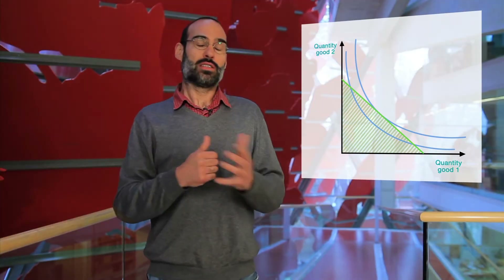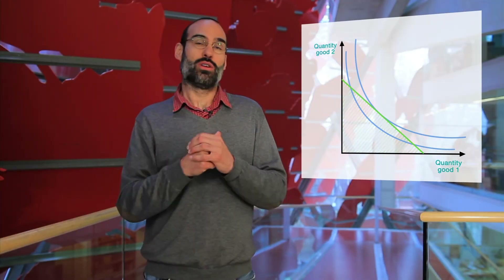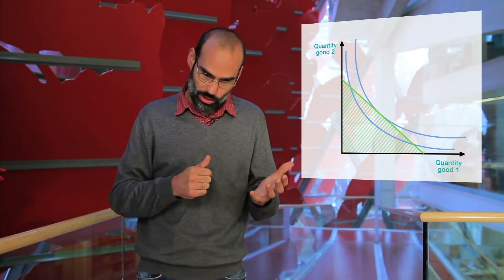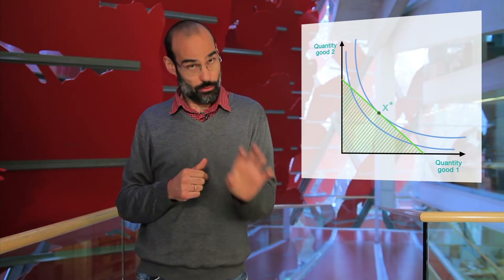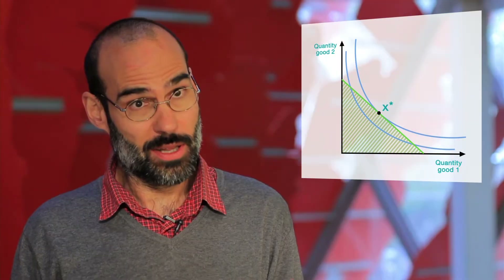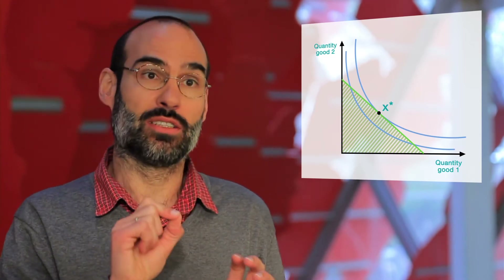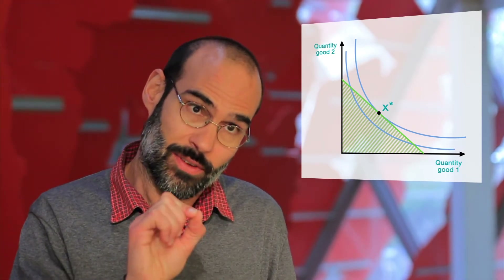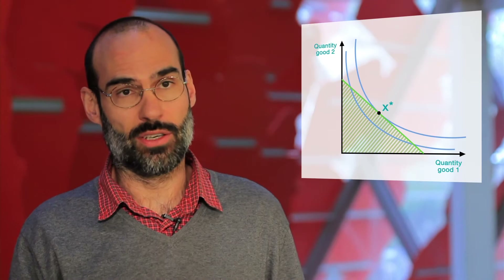The problem of the decision maker is to select one of these consumption bundles. To do so, he focuses on the affordable consumption bundles and looks for the most preferred alternative. This is alternative X* in the figure.